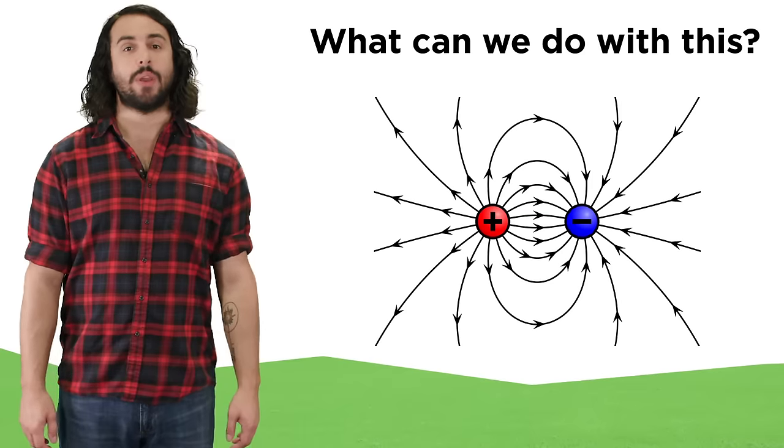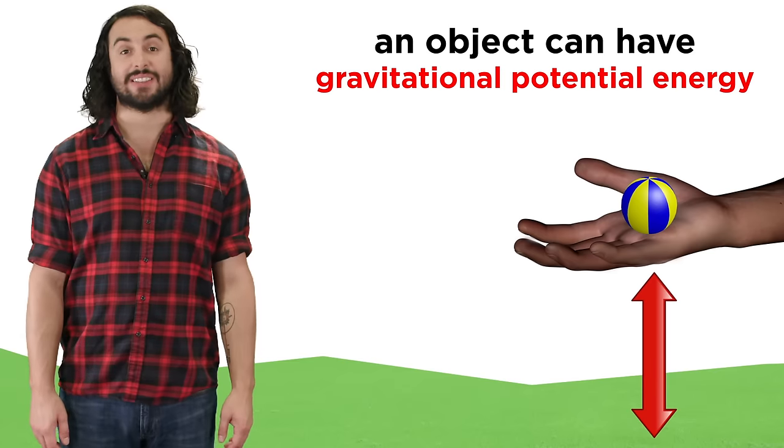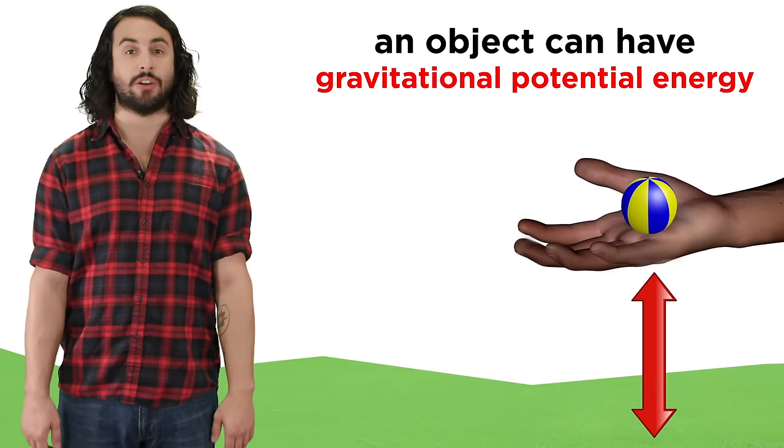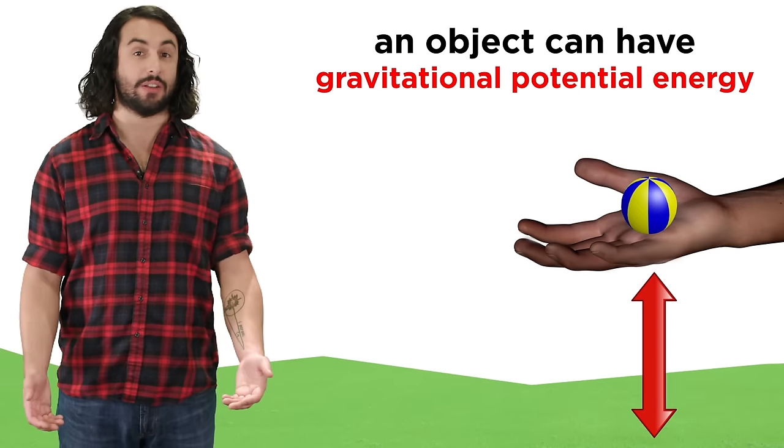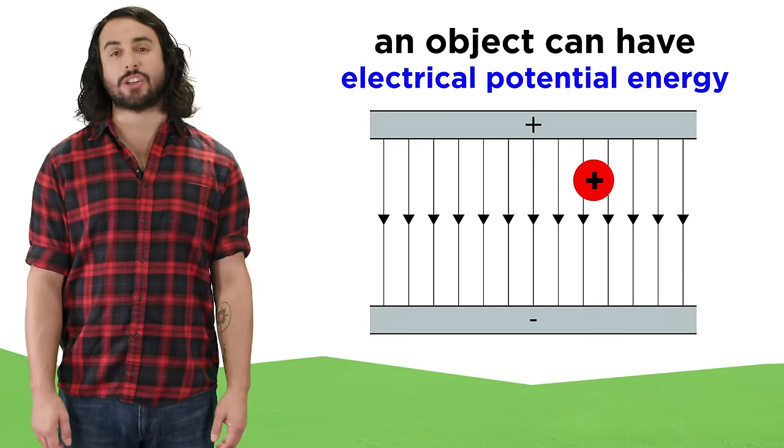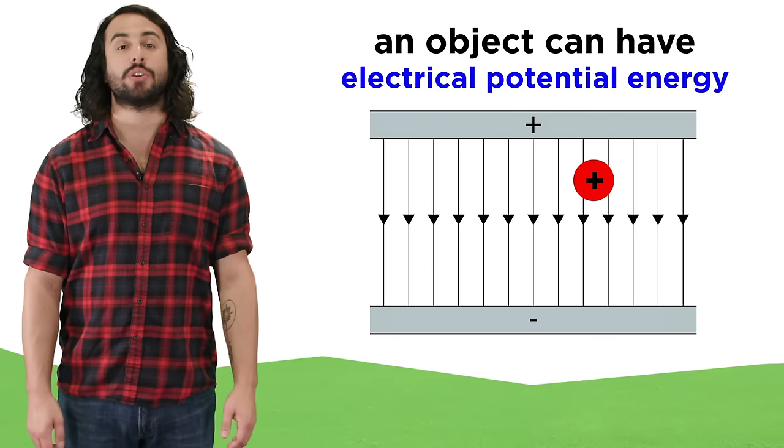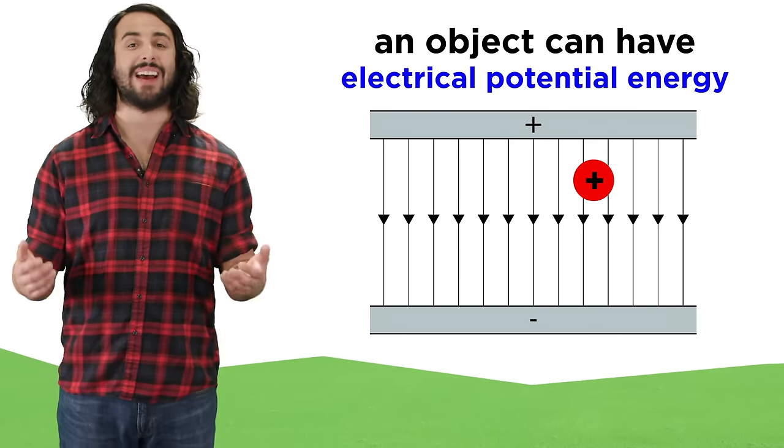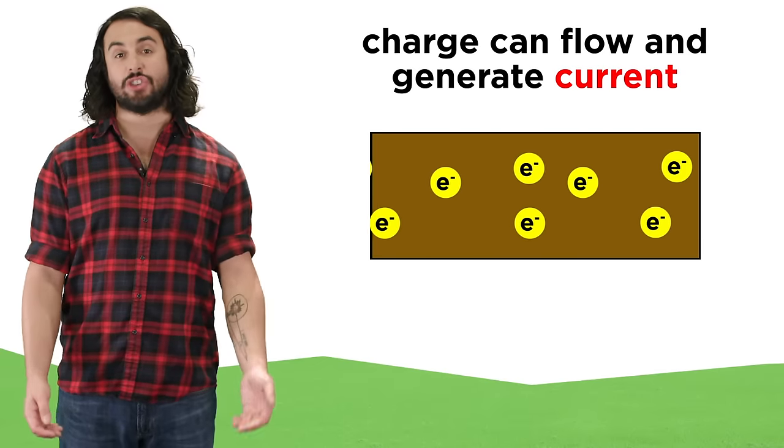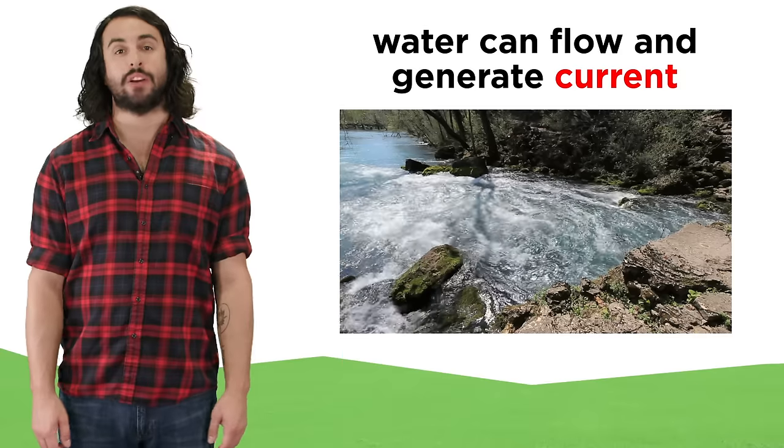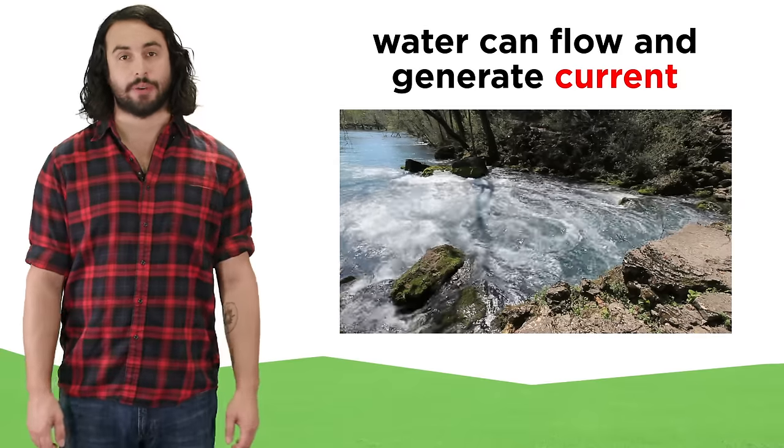To answer this, we must understand that just as there is gravitational potential energy by virtue of an object's position in a gravitational field, there is also electrical potential energy by virtue of an object's position in an electric field, and charged particles can flow and generate current just like water in a river can flow and generate its own kind of current.